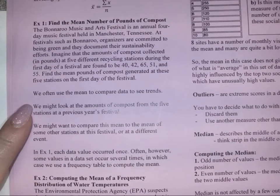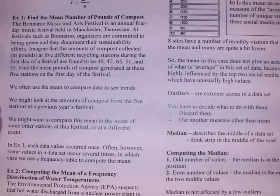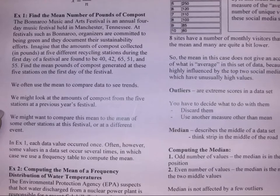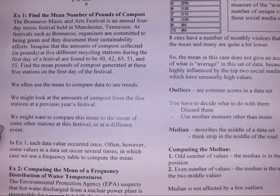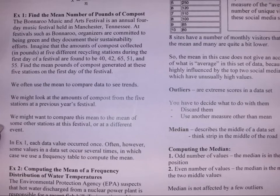This tells us that they found an average of 50.6 pounds of compost at the five stations. We often use the mean to compare data to see trends. We might want to compare this mean to the mean of some other stations at the festival or at a different event.